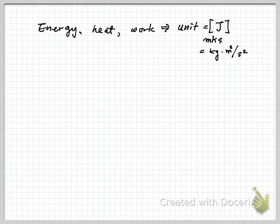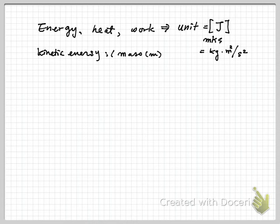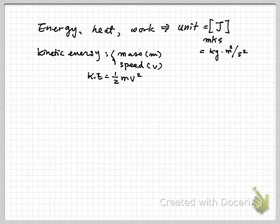As far as energy is concerned, you might have heard about different forms of energy. In high school physics, you might have heard about kinetic energy. Kinetic energy involves a mass M and a speed V, and the kinetic energy is one half times M times V squared. If you use the right units — kilograms for mass and meters per second for speed — you will get the unit of kinetic energy.